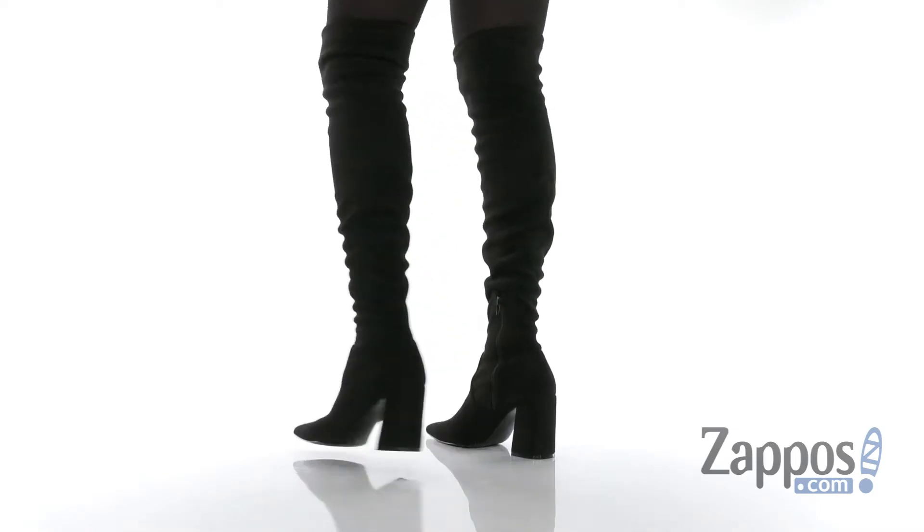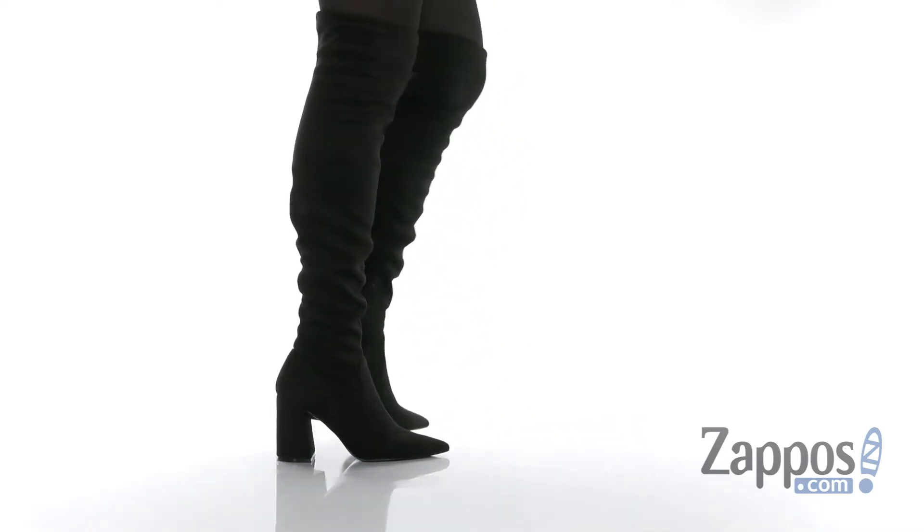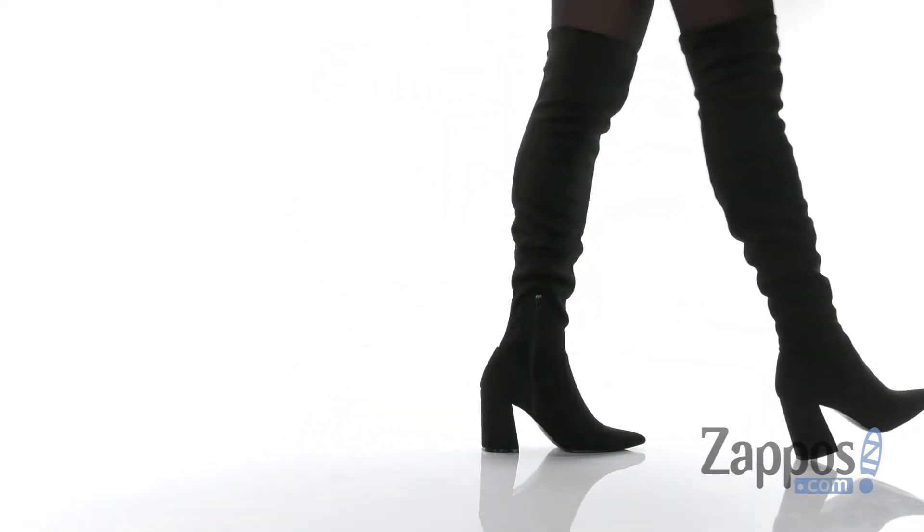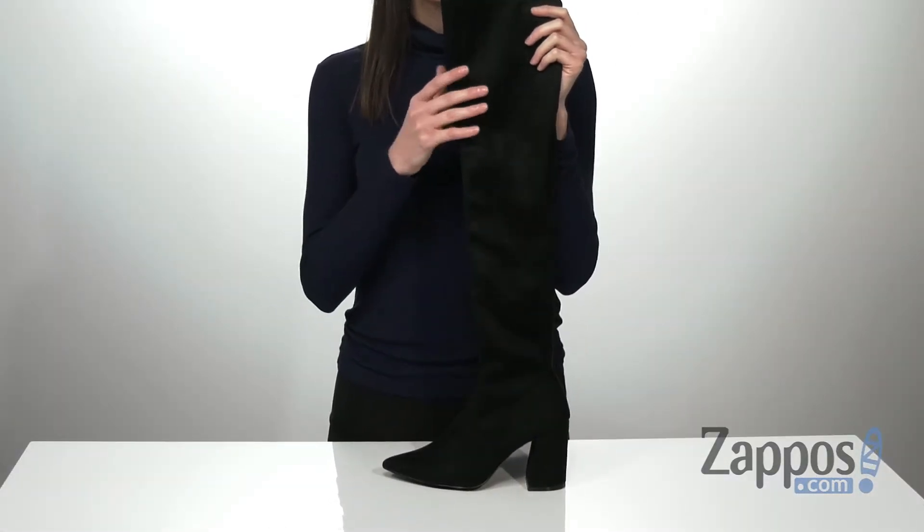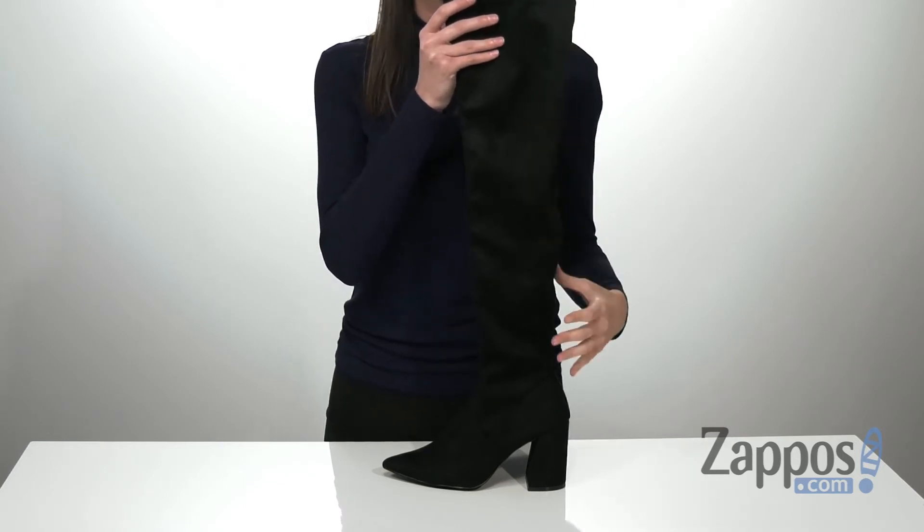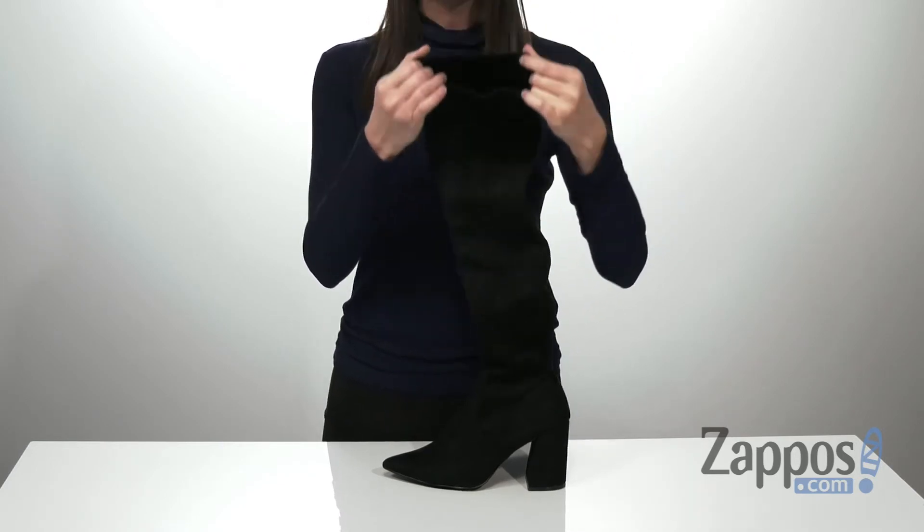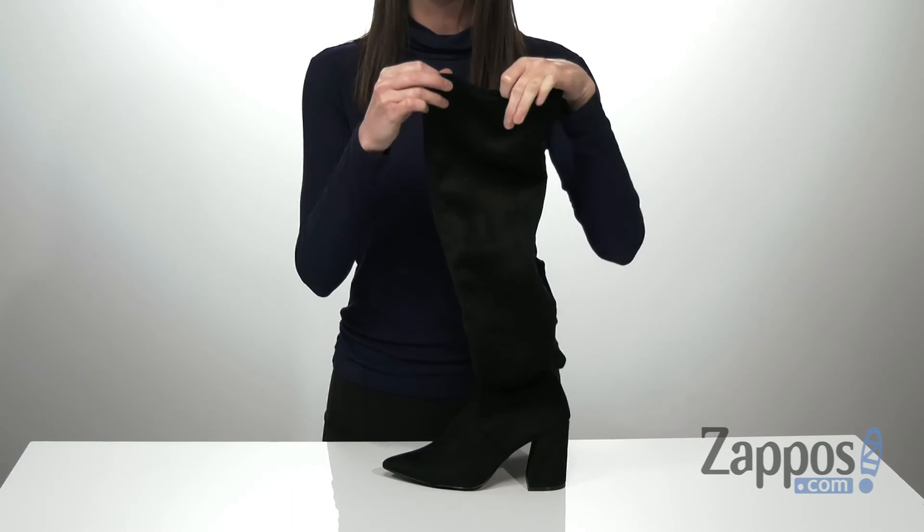These boots have a totally over-the-top silhouette with an extra tall shaft that will hit well above your knee. The whole upper is made of a soft and stretchy textile, so even though it's covering your whole leg, they're not going to feel constrictive. You also have a little bit of stretch around the top of the collar.